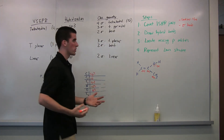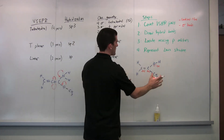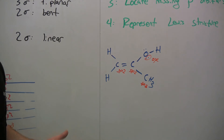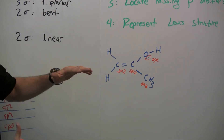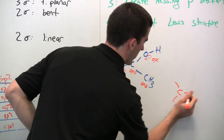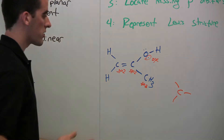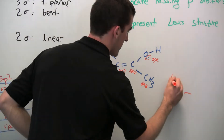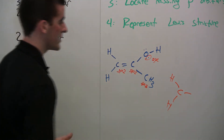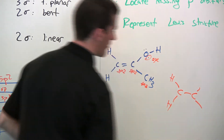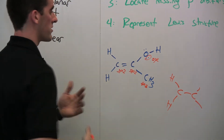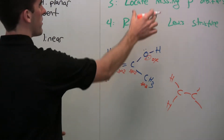The next step for drawing out the 3D orbitals is to draw the hybrid bonds based on these hybridizations. The first carbon is SP2, meaning it's planar with bonds roughly 120 degrees from each other. I'll draw that out with the hydrogens. The second carbon is also SP2, so I'll draw those bonds roughly 120 degrees apart. I'm not going to worry about the double bond yet because those are the pi electrons — that's step 3.